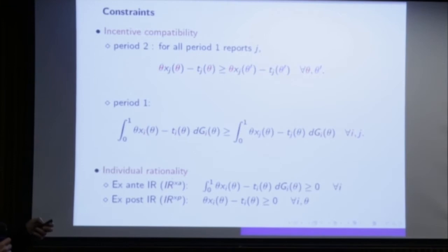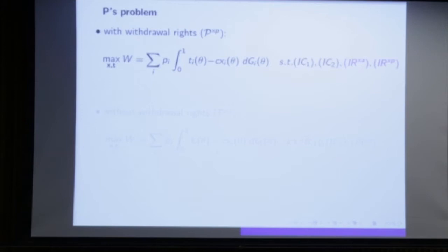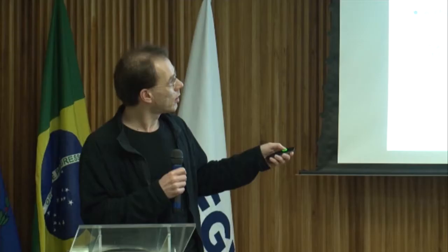The principal's problem with withdrawal rights is to maximize the expected payoff of the principal — expected transfers minus cost — subject to the incentive constraints and individual rationality constraints. Without withdrawal rights, i.e., the standard approach that forgets the ex-post IR, we have almost the same problem but ignore the ex-post IR. That is what Courty and Li do — they call it sequential screening.